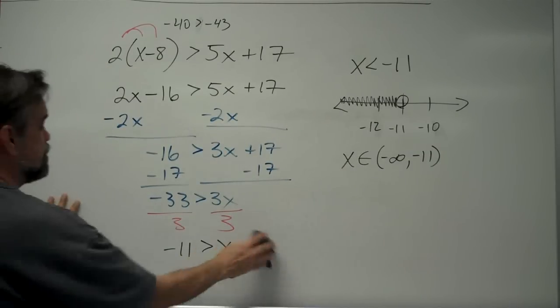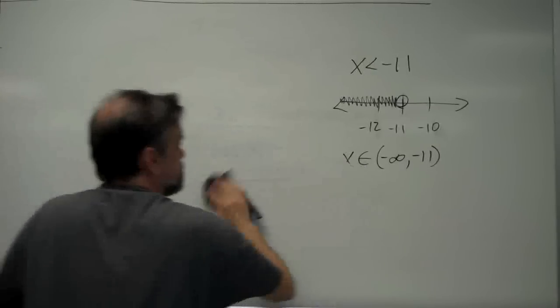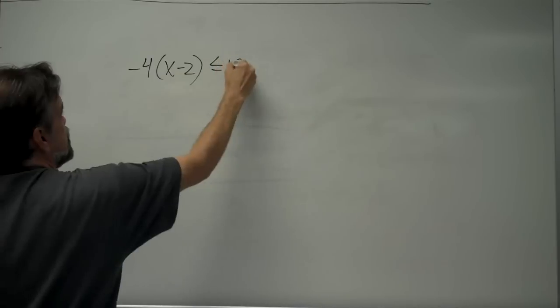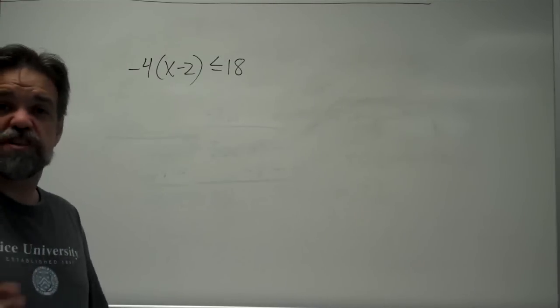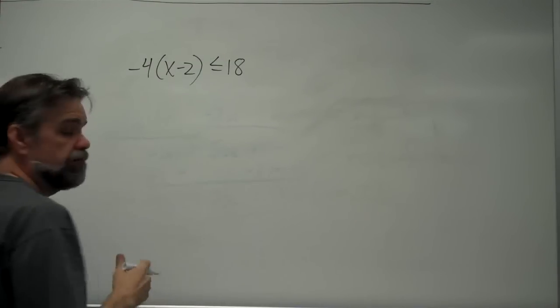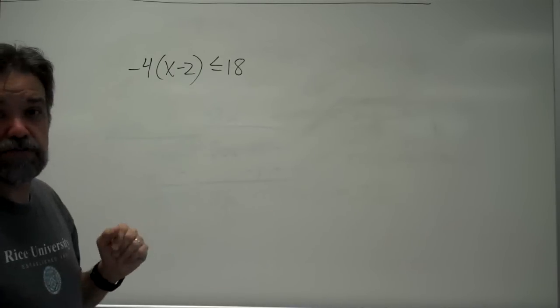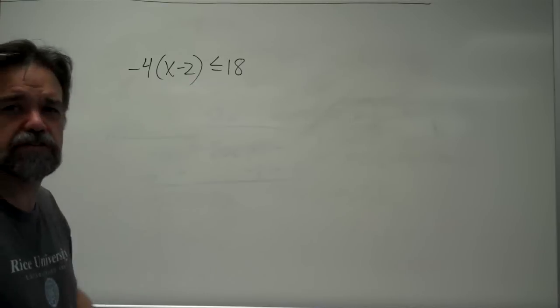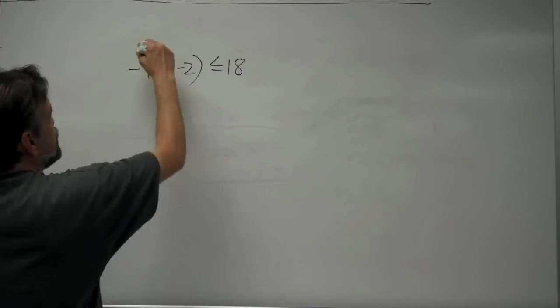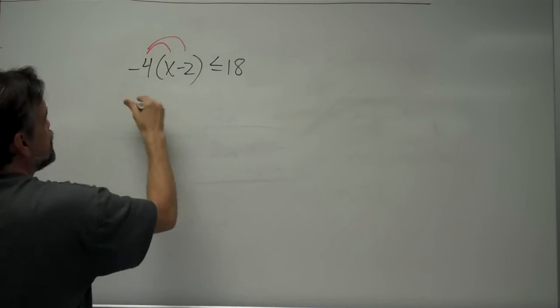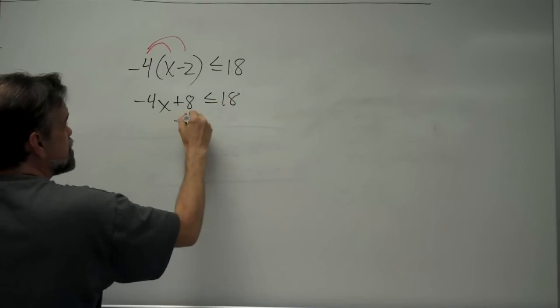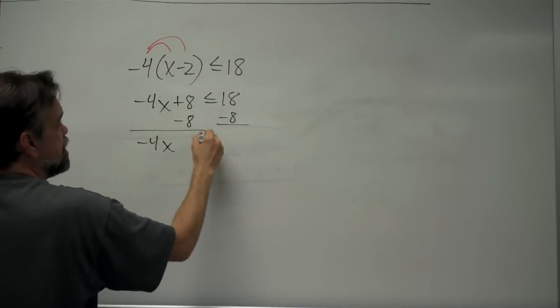Let's do another example: −4(x − 2) ≤ 18. You treat this just like an equation. I'm going to distribute the −4: negative 4 times x is −4x, and negative 4 times negative 2 is positive 8. So we have −4x + 8 ≤ 18. Subtract 8 from both sides to get −4x ≤ 10.